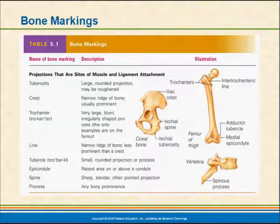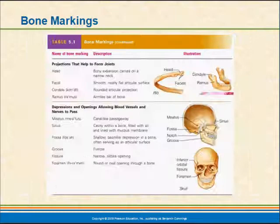In your textbook there is a table that describes these markings. You see tuberosity is a large rounded projection that may be roughened. We also have crests, trochanters, lines, tubercles, epicondyles, spine processes, and all of these. This is more or less a memorization exercise — just go through, look at the titles, and understand the basic description of each structure.